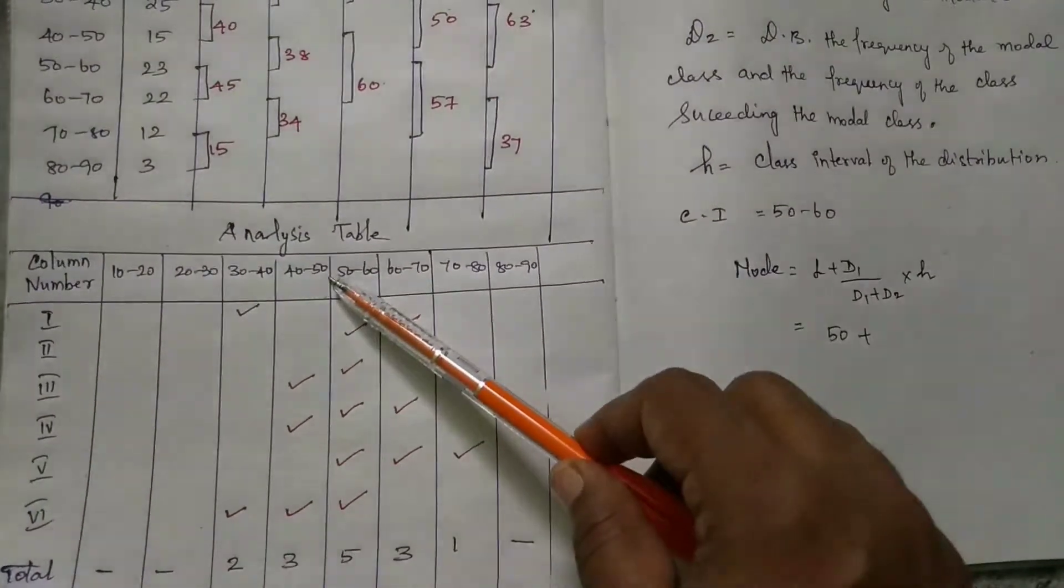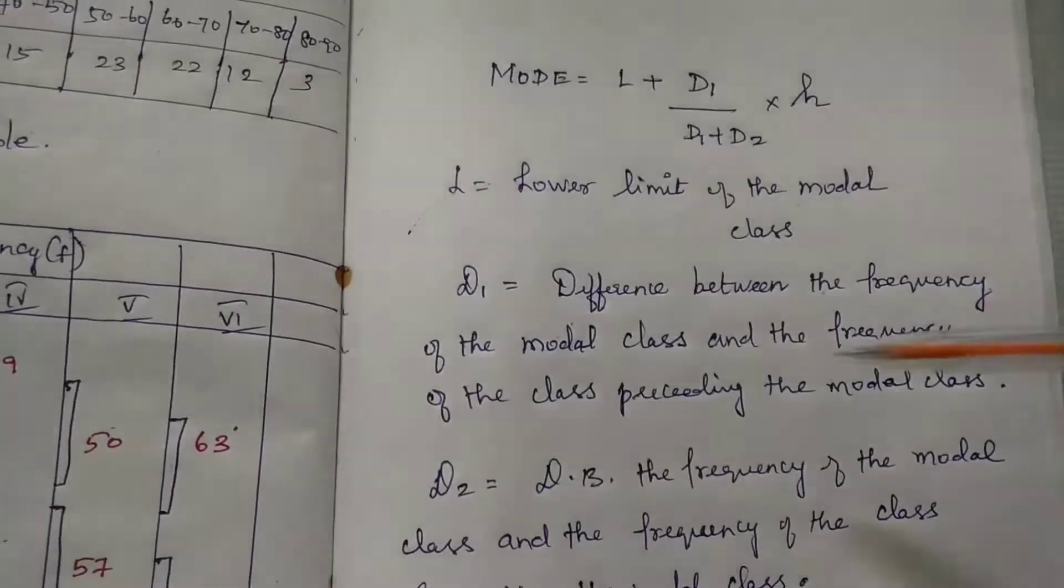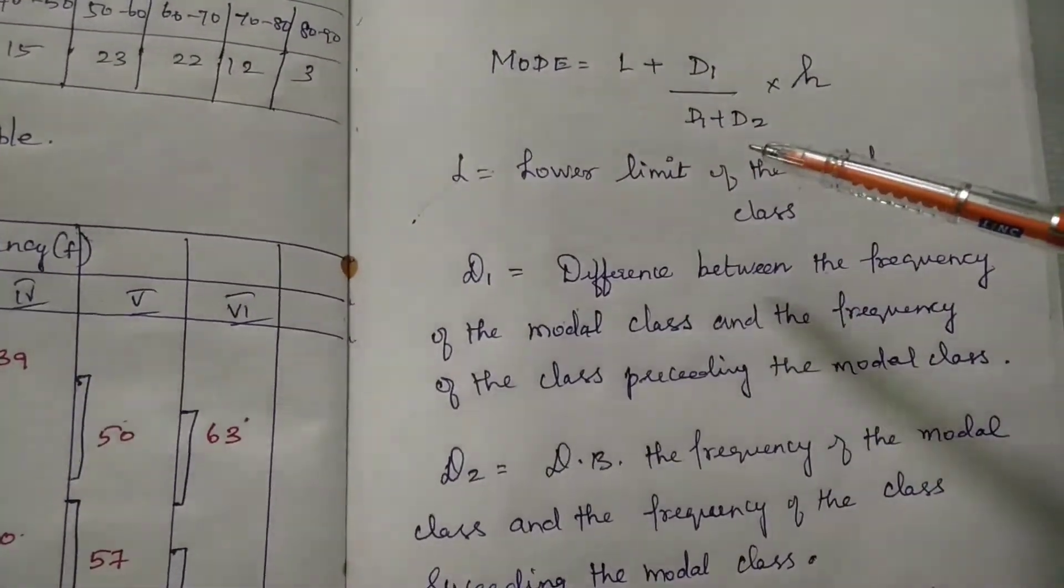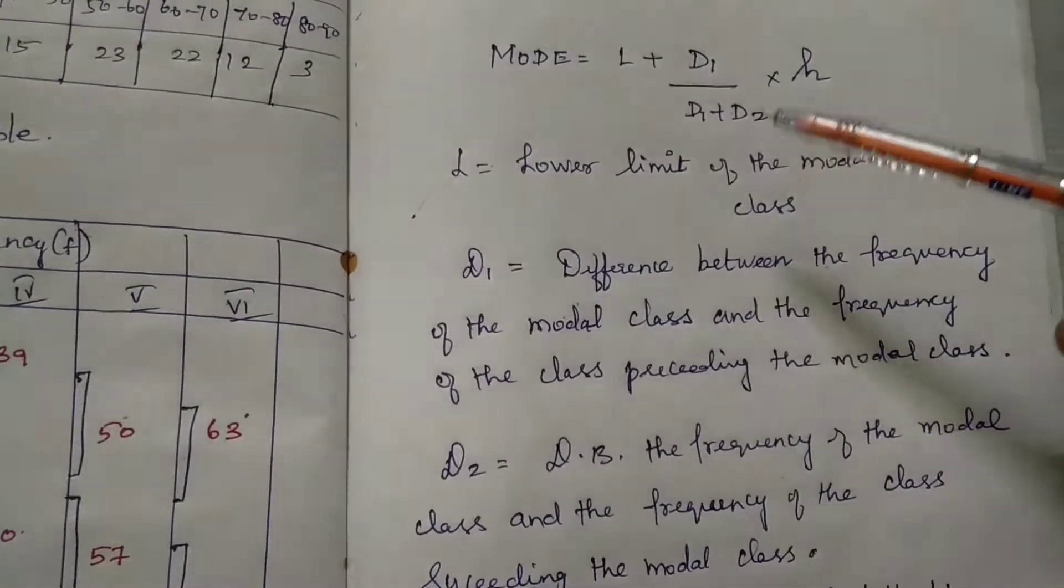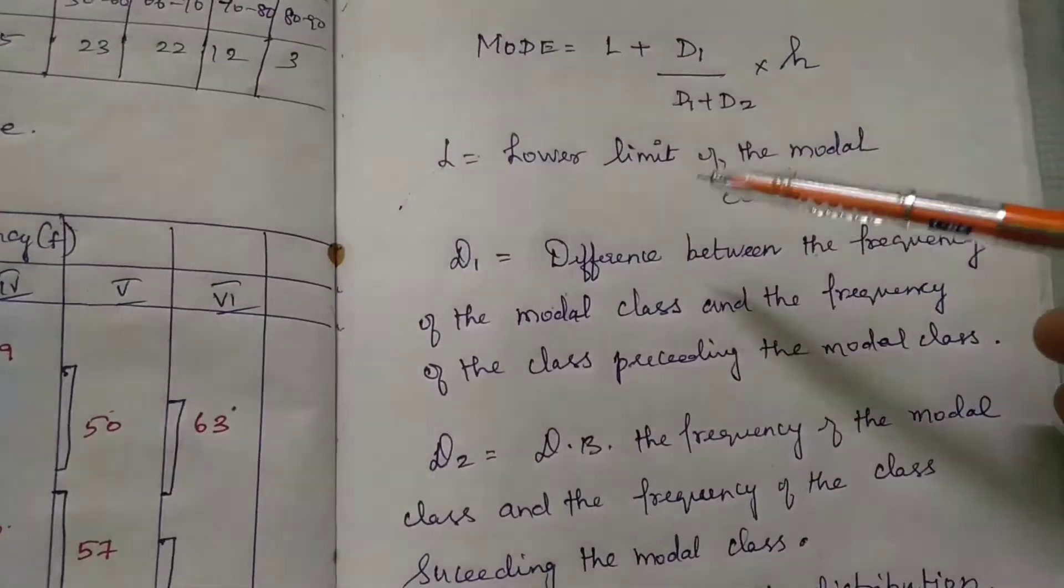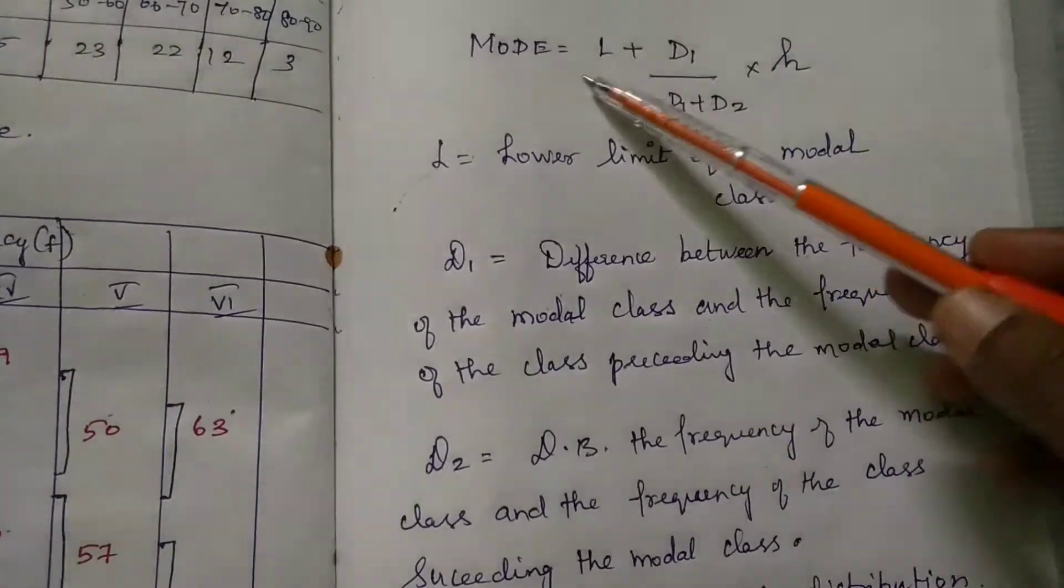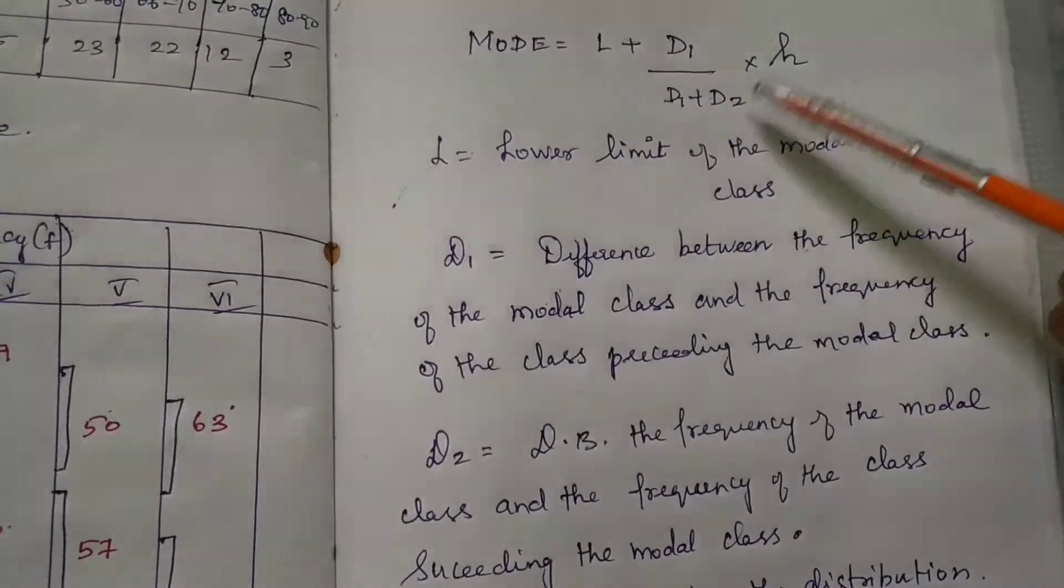This is statistics, class level, CBSE. The mode formula is: L plus D1 divided by D1 plus D2, multiplied by H.